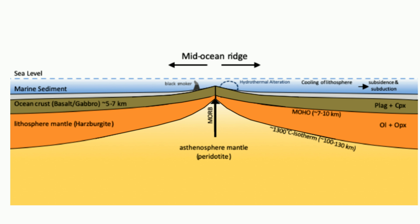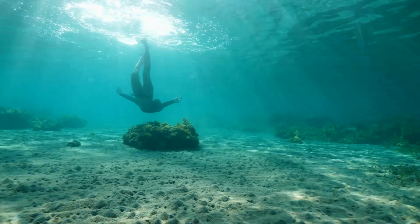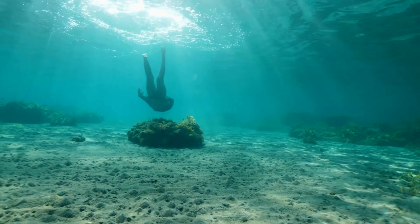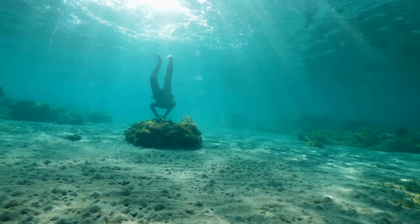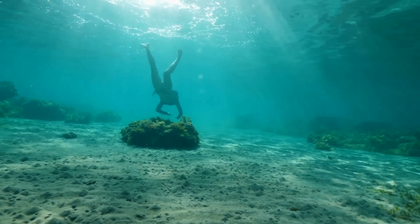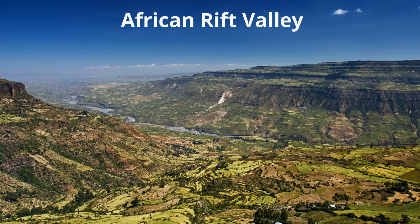Most of these divergent boundaries are located on the ocean floor. However, rift valleys may also form where the continents are separated by plate movement.